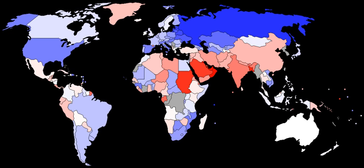Human sex ratios, either at birth or in the population as a whole, are reported in any of four ways: the ratio of males to females, the ratio of females to males, the proportion of males, or the proportion of females. If there are 108,000 males and 100,000 females, the ratio of males to females is 1.080 and the proportion of males is 51.9%. Scientific literature often uses the proportion of males, but this article uses the ratio of males to females unless specified otherwise.